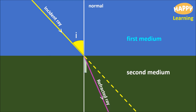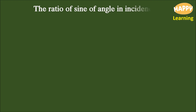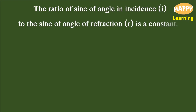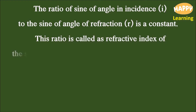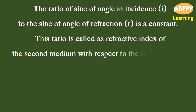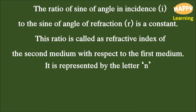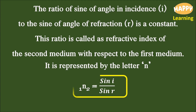The ratio of the angle between the incident ray and normal to the angle between the normal and refracted ray is a constant. This ratio is called the refractive index of the second medium with respect to the first medium. It is represented by the letter n. n of 2 with respect to 1 is equal to sin i divided by sin r. It has no units.